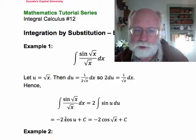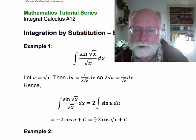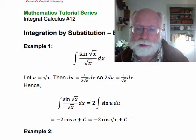The integral of sine u is minus cos, so we get minus 2 cos u plus a constant, and we back substitute u equals root x so we get minus 2 cos root x plus a constant.